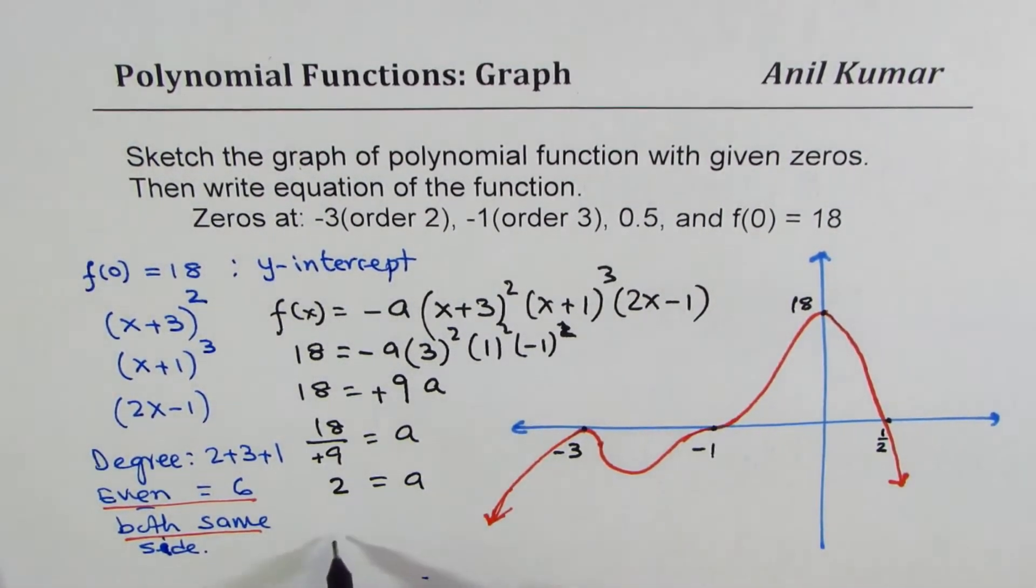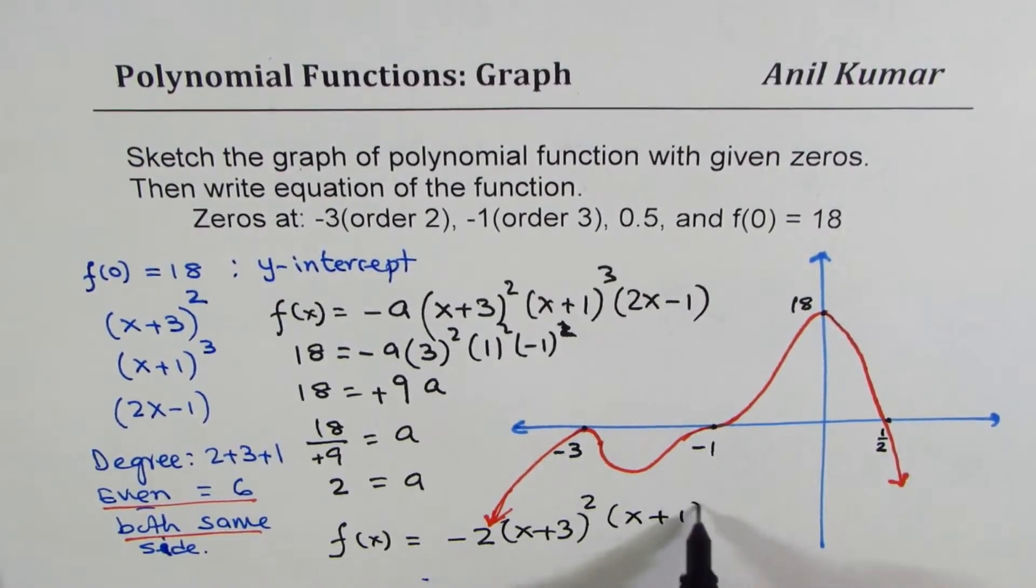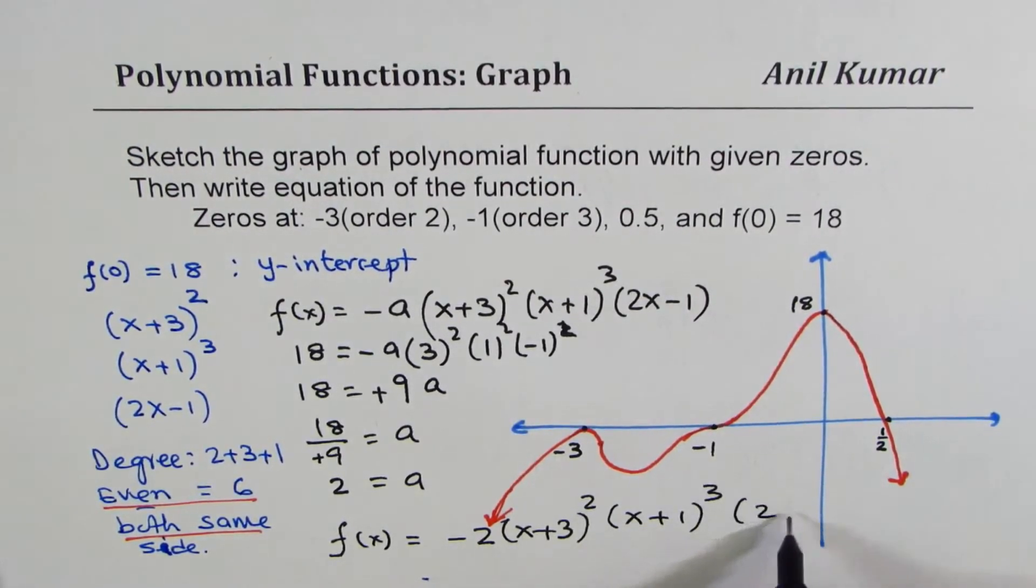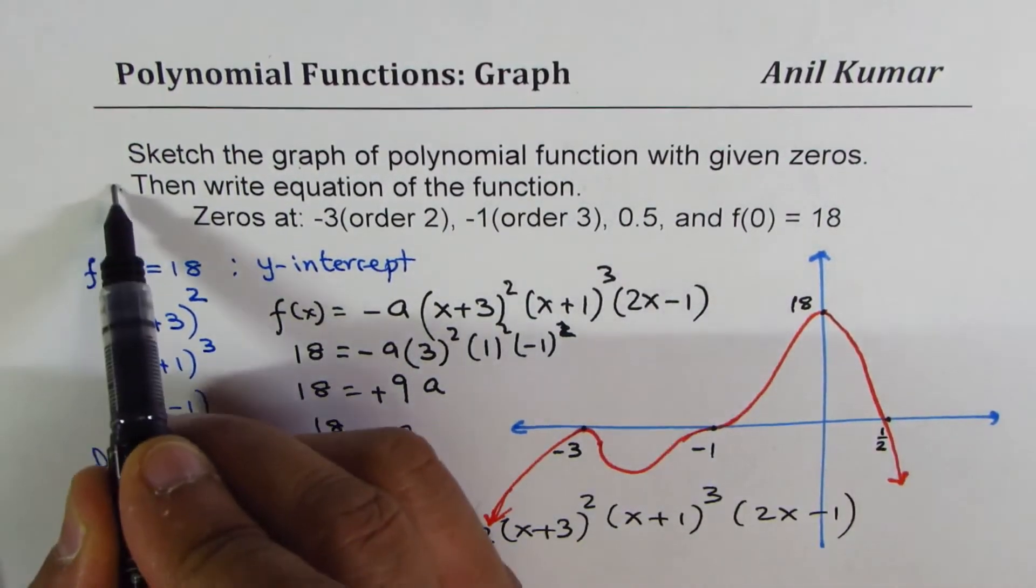So, that gives you the function f of x as equal to minus 2 x plus 3 whole square times x plus 1 whole cube times 2x minus 1. So, that becomes the equation of the function.